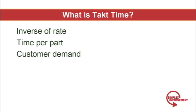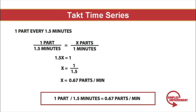Takt time tells you how often one piece should be produced. It's an inverse of a rate. A rate is expressed as parts per time. Takt time is expressed as time per part. They both tell you the same thing, but using a Takt time forces you to think in terms of a single piece. Fractions of time are also easier to comprehend than fractions of a part. For example, if I told you to make one part every 1.5 minutes, you could easily understand that you have 1 minute and 30 seconds to produce a part. But if I told you to produce 0.67 parts in a minute, you'd have a harder time understanding that. They both say the exact same thing, but a fraction of a part is more confusing than a fraction of time.